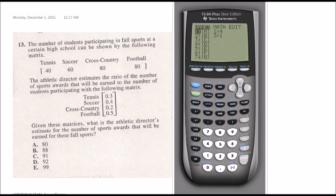Then I go back into matrix here. I'm going to go to edit and go down to B. And now you can see the second matrix they gave me here. Well, this had four rows and it had one column. So I'm going to go ahead and change this to a four by one. So that's 0.3 for tennis, 0.4 for soccer, 0.2 for cross country, and 0.5 for football.